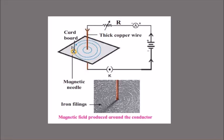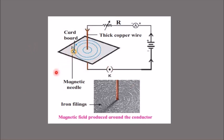To understand the magnetic fields produced around a conductor, we take a cardboard with a circuit. We have applied a resistor, an ammeter to check the current, a battery, and a plug key. The wire is passed through the cardboard sheet. We keep a magnetic compass needle on the cardboard and sprinkle iron filings on top. We will observe what happens to the magnetic needle and to the iron filings when we pass the current.